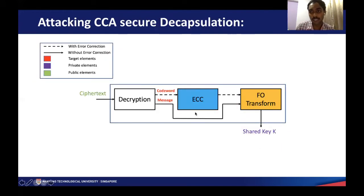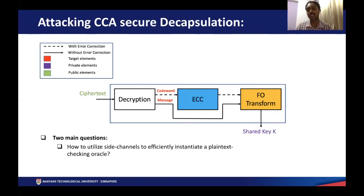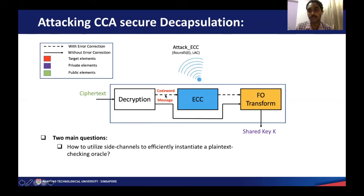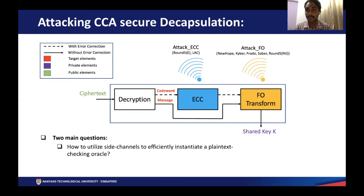This is the overall block diagram of the ciphertext decapsulation. In order to attack it, we need to answer two key questions. First, how do we utilize side-channel information to instantiate an efficient plaintext checking oracle? Looking at the block diagram, the secret codeword is first supplied to the error-correcting codes if a scheme uses them, and then given back to the FO Transform. To gain information about the codeword, we need to obtain side-channel information from some operations within the error-correcting code. In schemes which do not utilize ECC, the message is directly given to the FO Transform, so we obtain side-channel information from the FO Transform. The second question is: how do we craft chosen ciphertexts such that the output of the instantiated oracle can be used to recover the secret key?